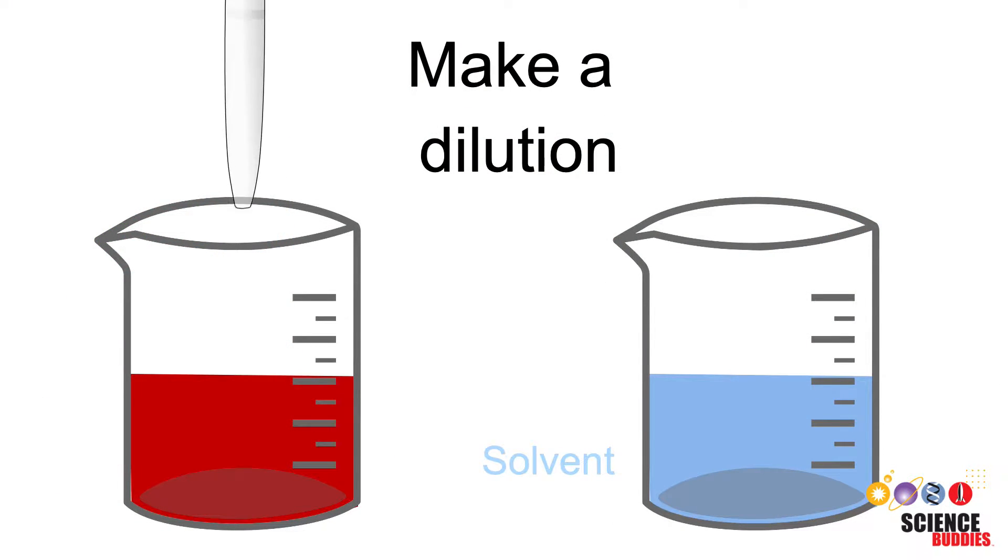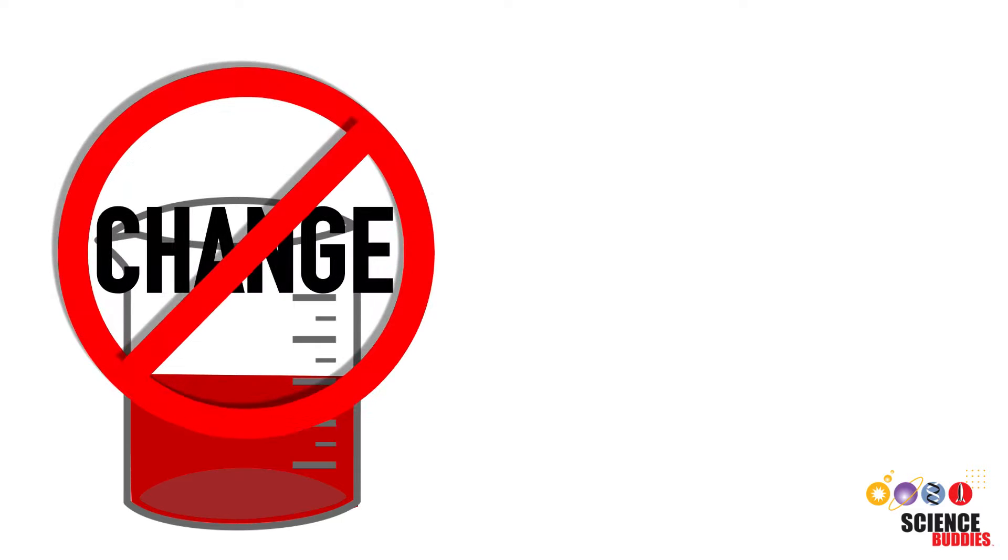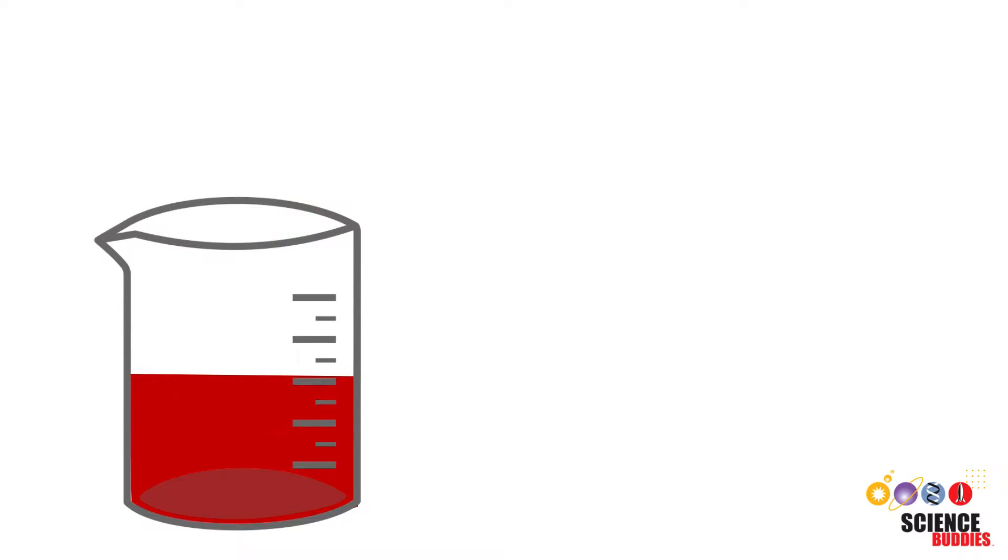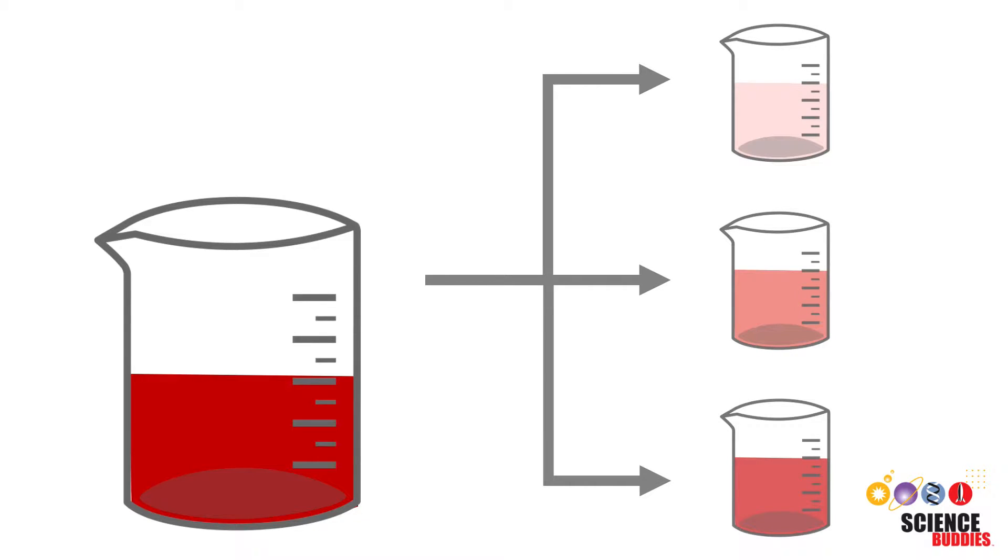Another way to make a dilution is to take a known volume of the original solution and add it into a new vial filled with a known amount of solvent. This is often the preferred way to make a dilution as you don't change the concentration of the original solution and can reuse it to create many different dilutions. The original solution you use to make your dilution is called the stock solution.